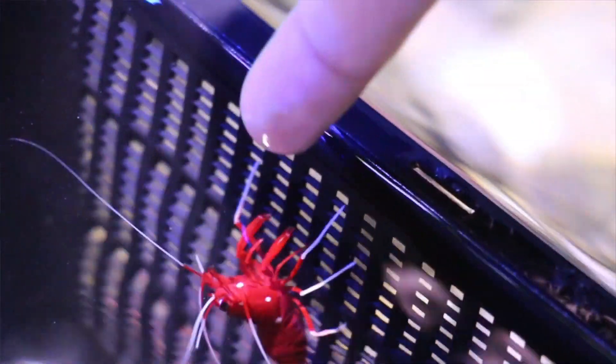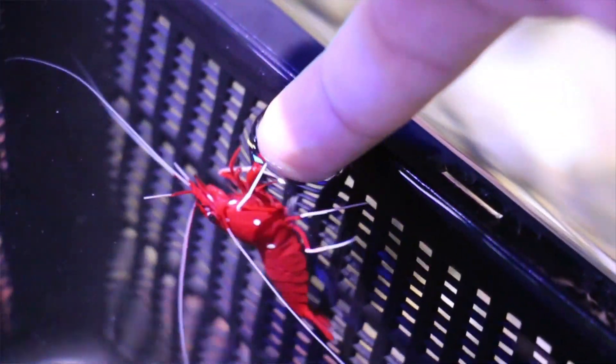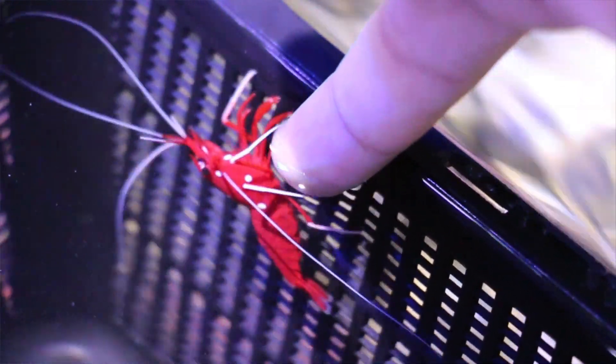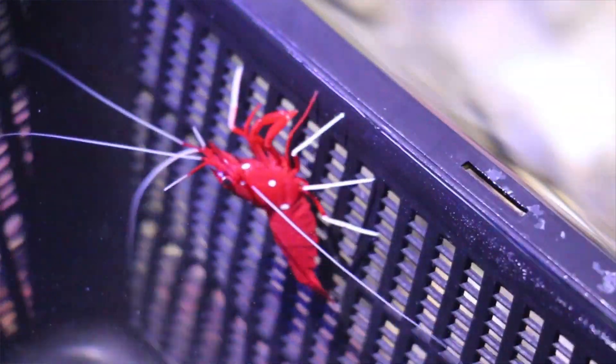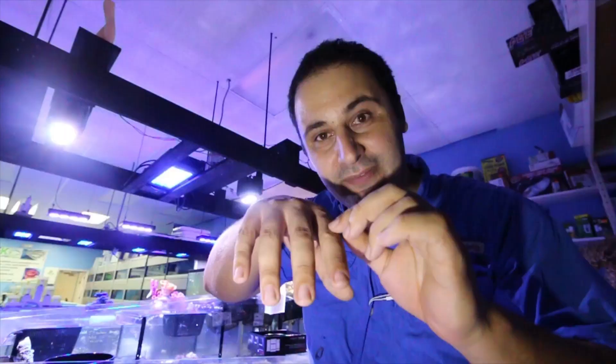They also can clean fish a little bit - not as much as cleaner shrimp, but they can clean them a little bit. If you put your finger in, you can train them. They will climb up and kind of nip a little bit, especially if they're hungry.